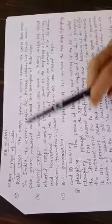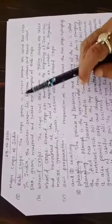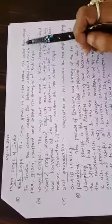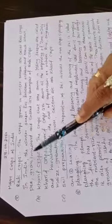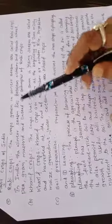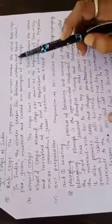What are Rabi crops? Answer: The crops grown in winter season are called Rabi crops. In India, the winter season lies between October and March.